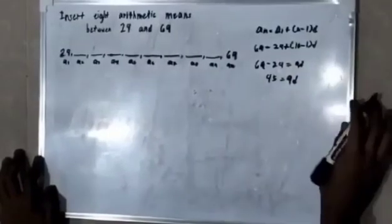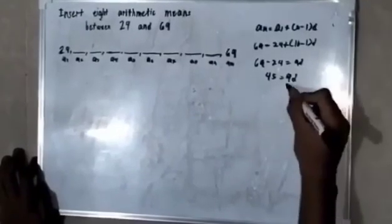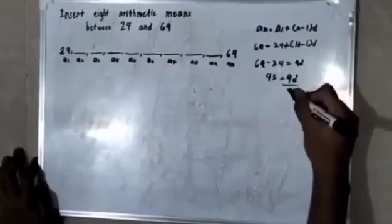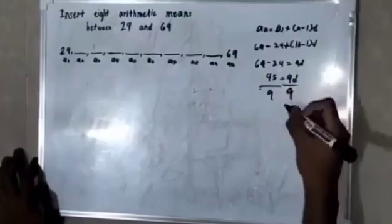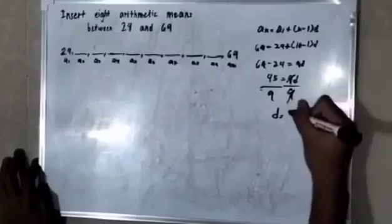So to get the value of d, which is the common difference, divide both sides by 9. So cancel, cancel, making it d is equal to 5.